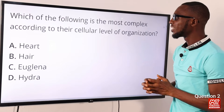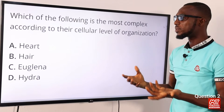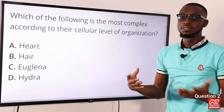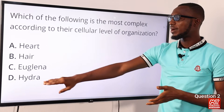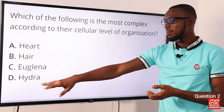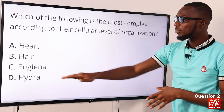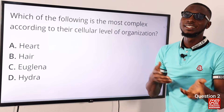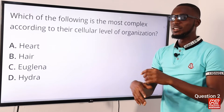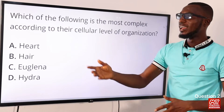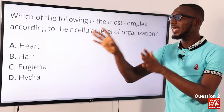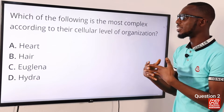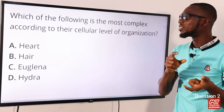Question two: which of the following is the most complex according to their cellular level of organization? The highest level is organ. We have cell, tissue, organ, and system. We don't have system here, but we have an organ — the heart. Hydra refers to coelenterates, invertebrate aquatic animals. Euglena is unicellular with animal-like and plant-like features. Hair refers to tissue level. So the most complex is the heart at organ level — option A.